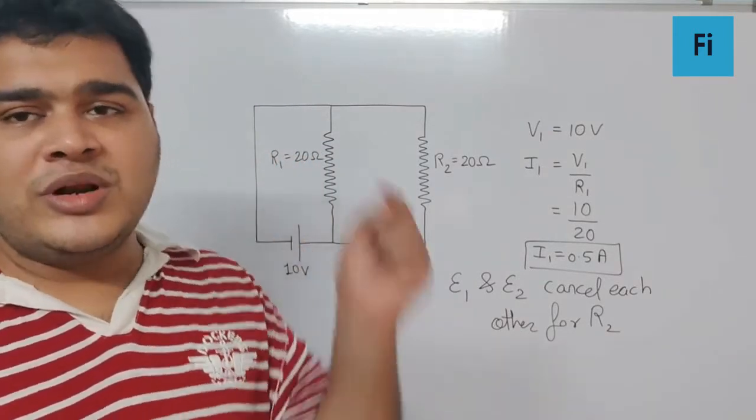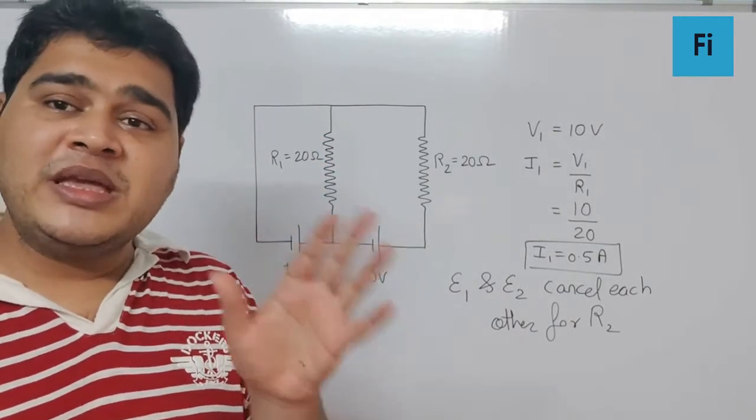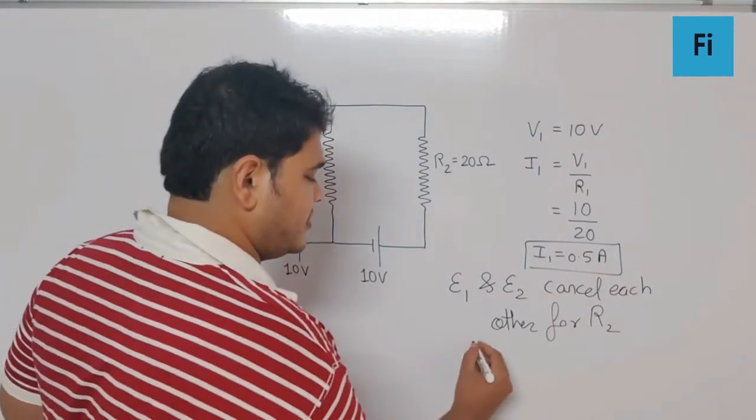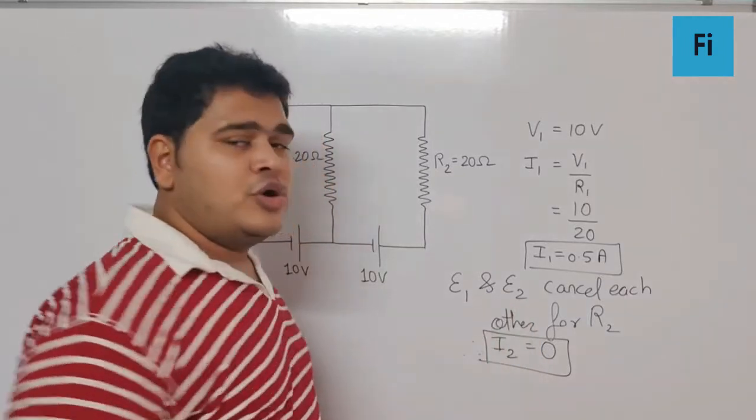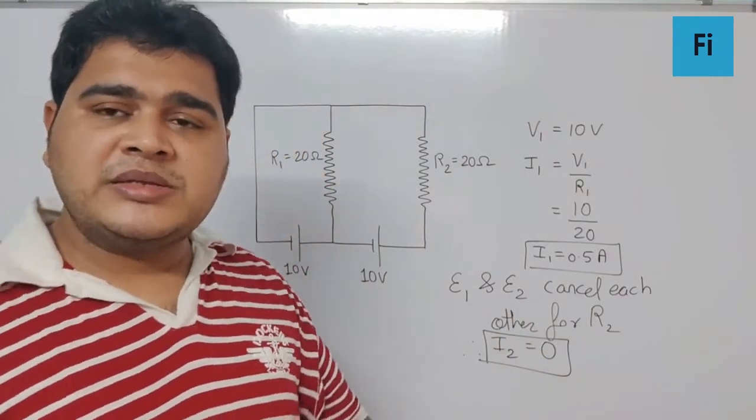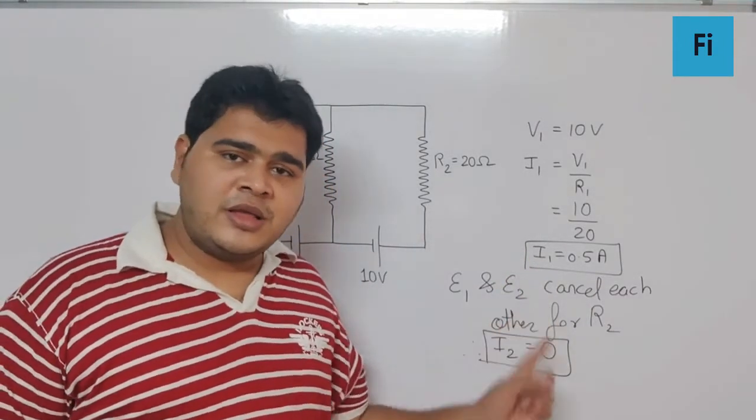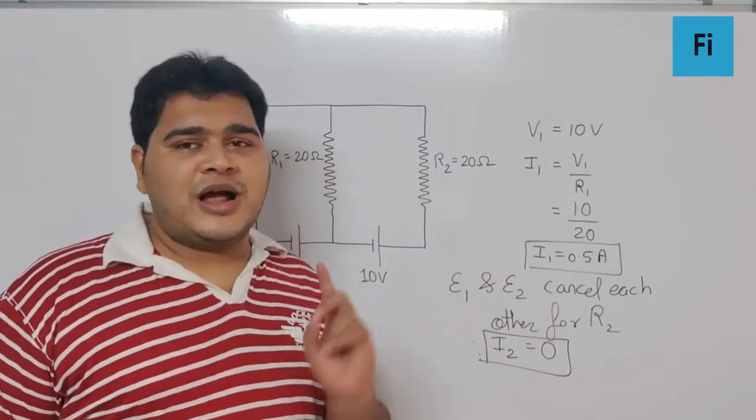And so your final answer is going to be 0.5 ampere through R1 and 0 ampere for R2.